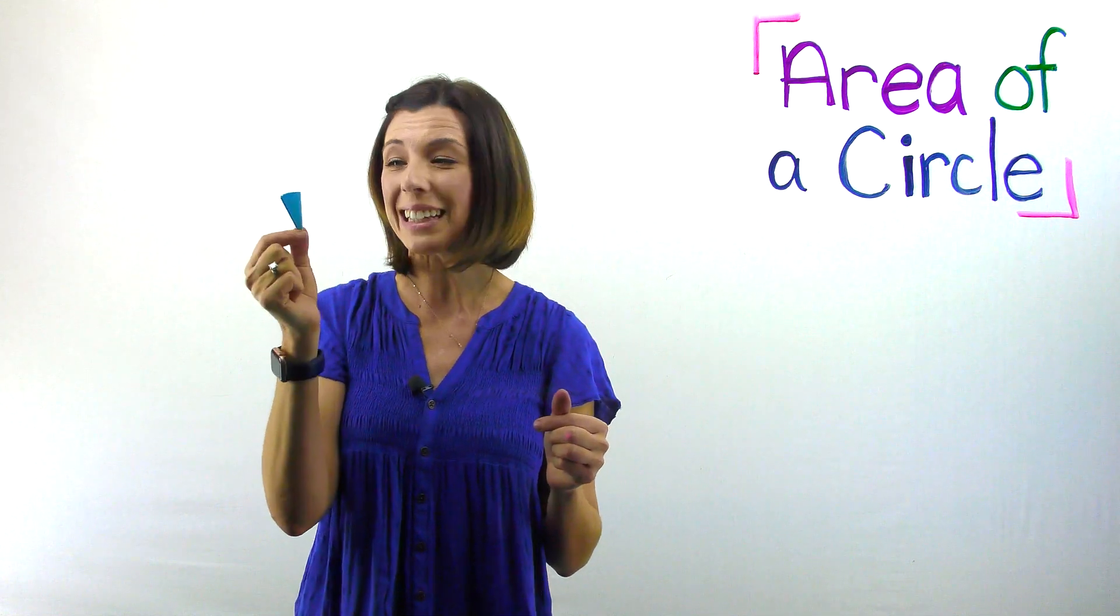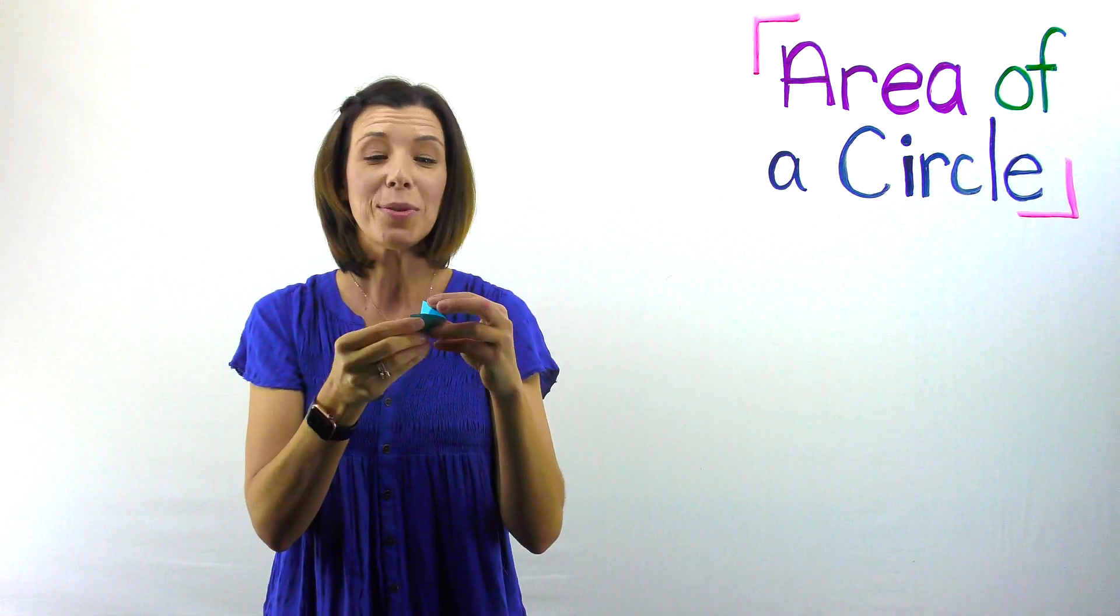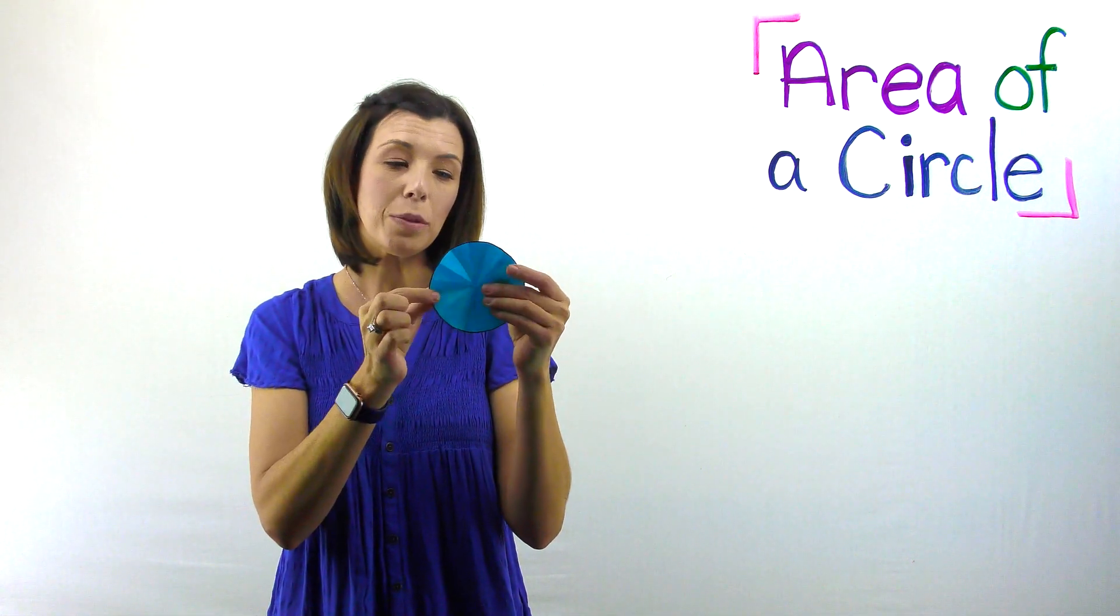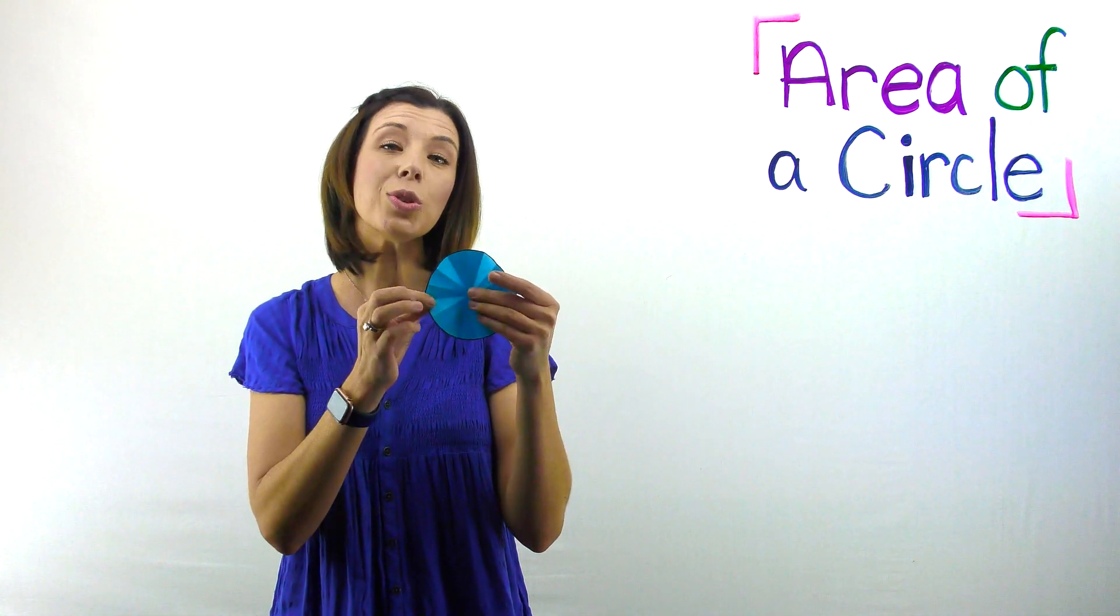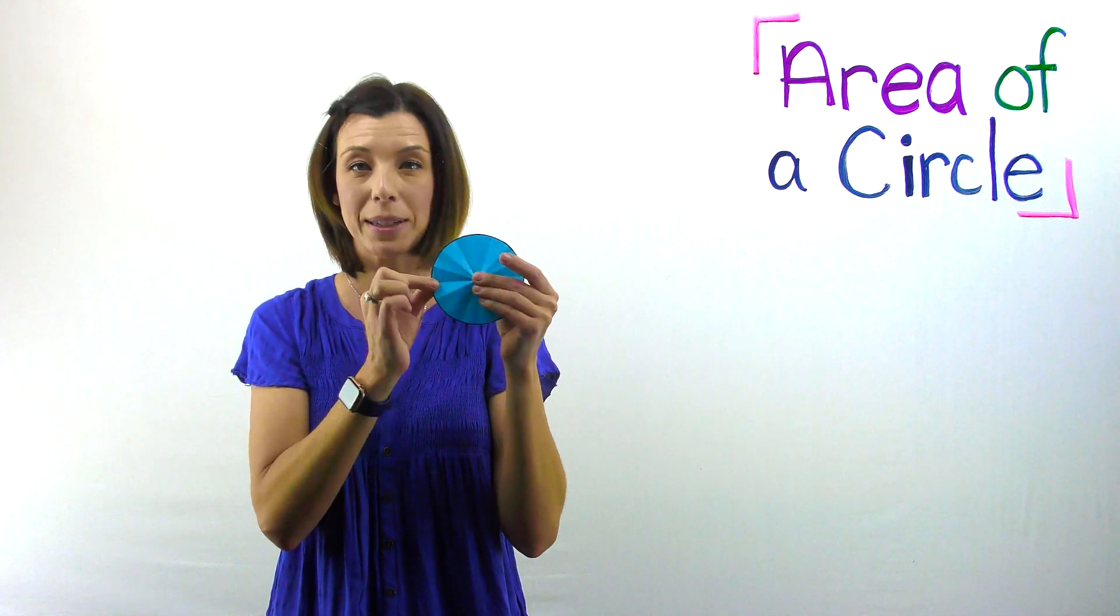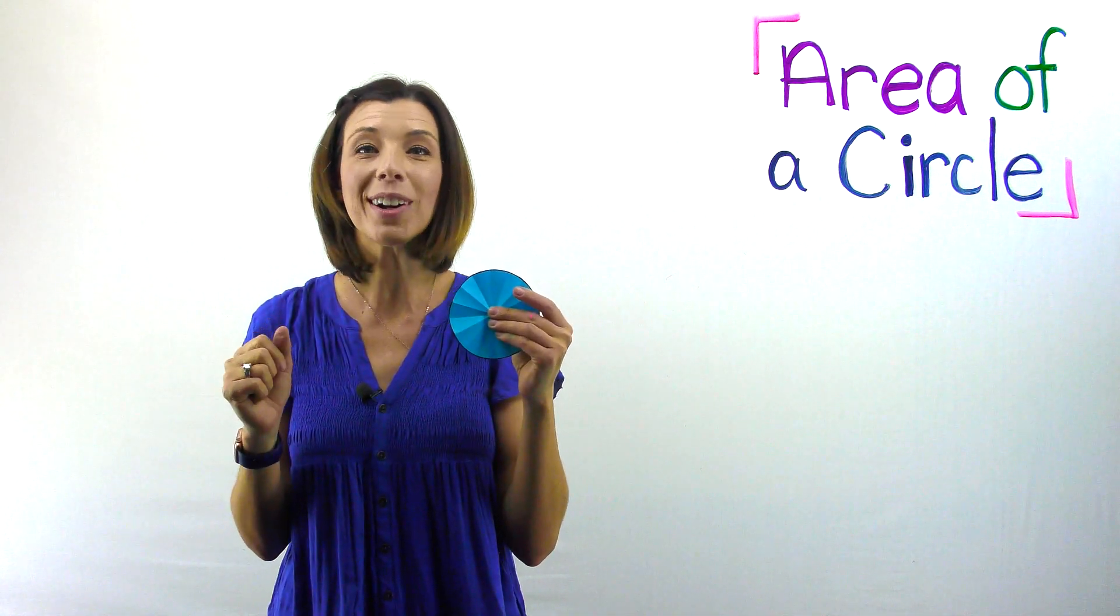You should have this really cute little ice cream cone looking shape. Now you can unfold it, and your circle should be separated into 16 equivalent pieces. I want you to take a marker and number those next.